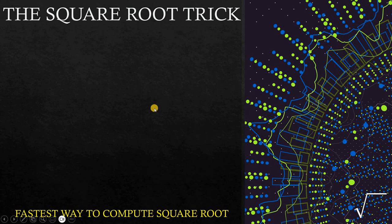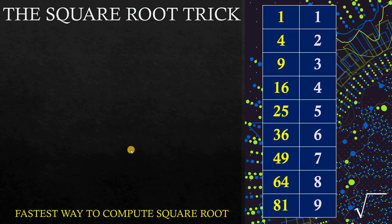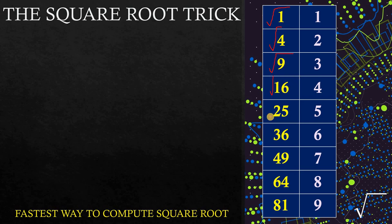For this trick to work, what we're going to do is to memorize this table. This is the square root table. This is very easy because we know the square root of 1 is 1, square root of 4 is 2, square root of 9 is 3, square root of 16 is 4, square root of 25 is 5, all the way up to 81 because the square root of 81 is 9.